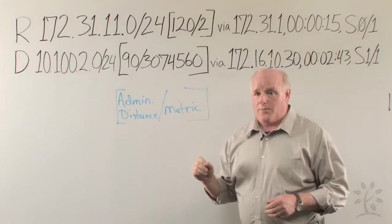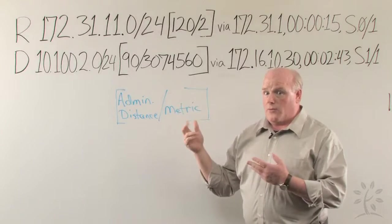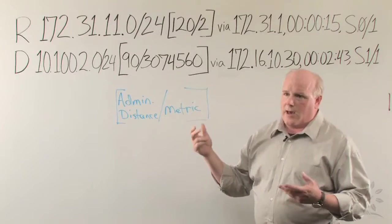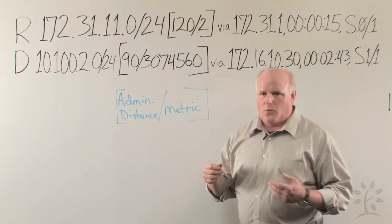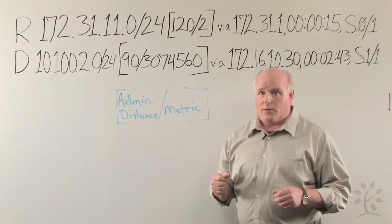First, use the show IP protocols command to take a look at what protocols are running on the router, and compare them to what's in the routing table. Then add a couple of protocols, or take some away, and see if it affects any change when you do the show IP route command.